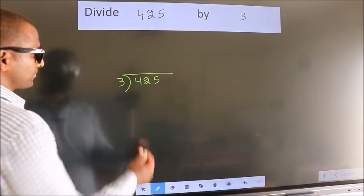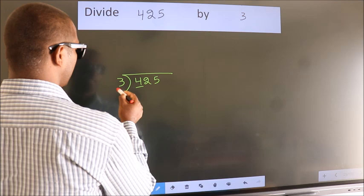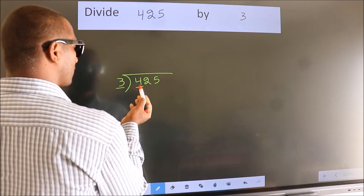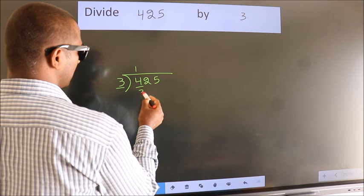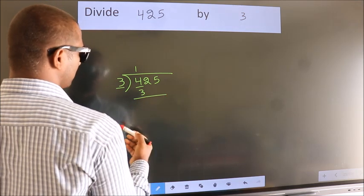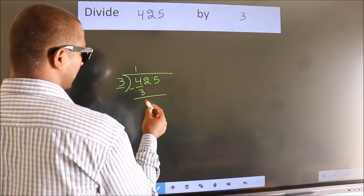Next. Here we have 4, here 3. A number close to 4 in 3 table is 3 ones 3. Now we should subtract. We get 1.